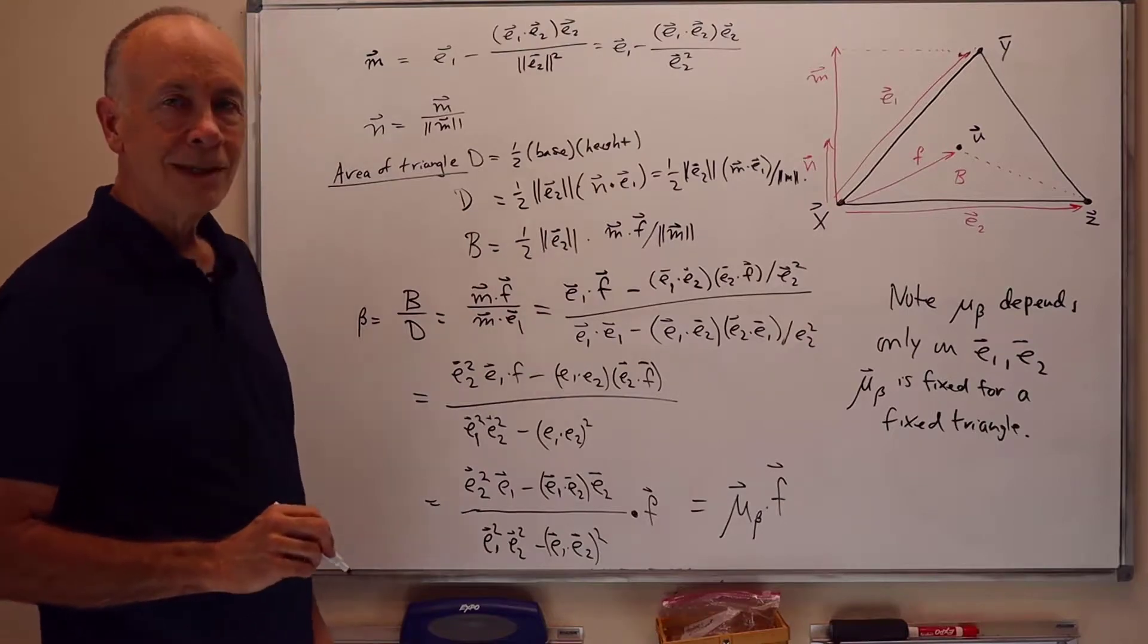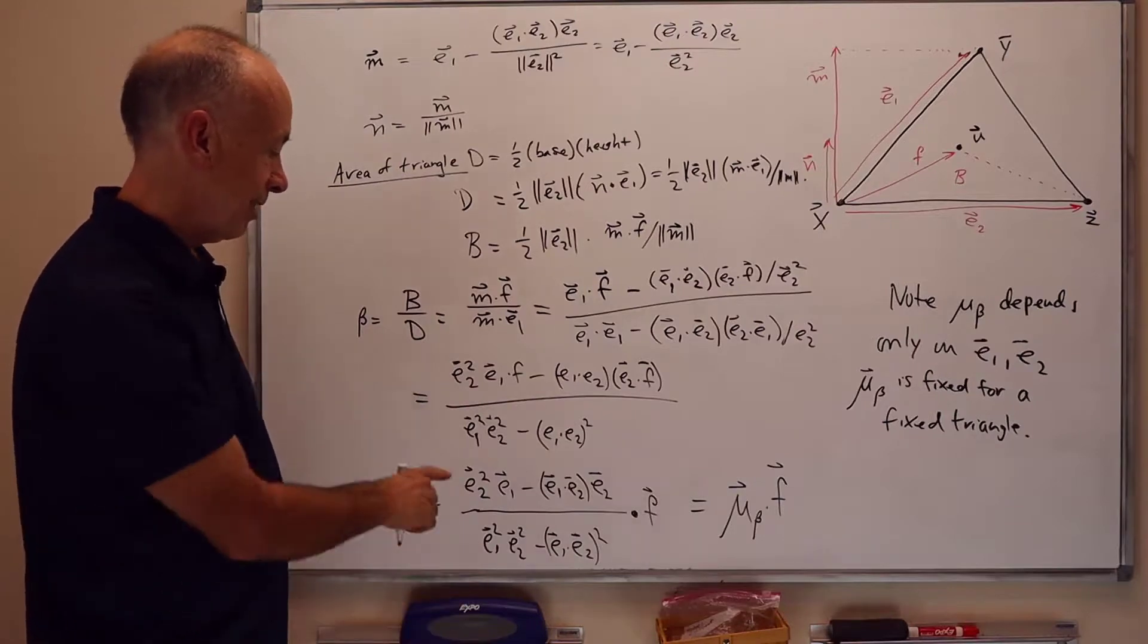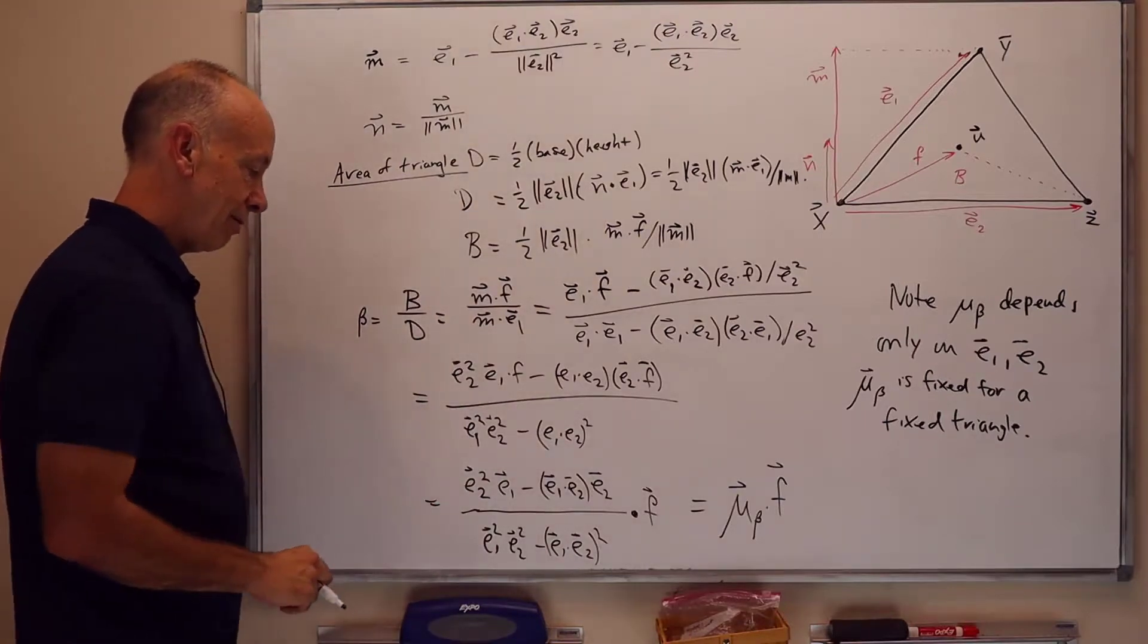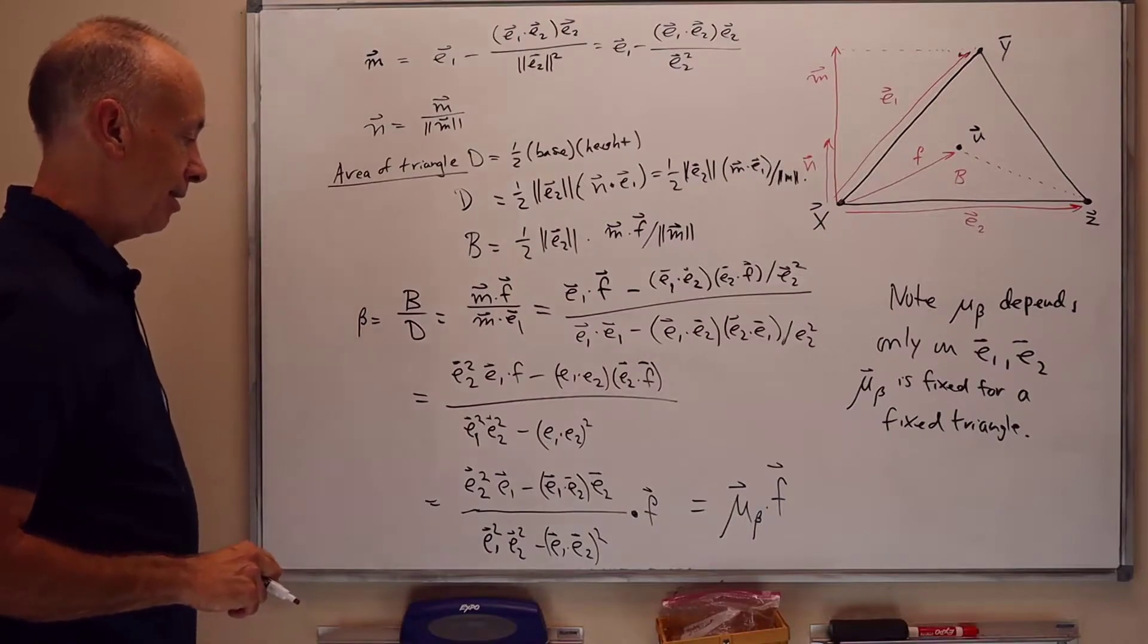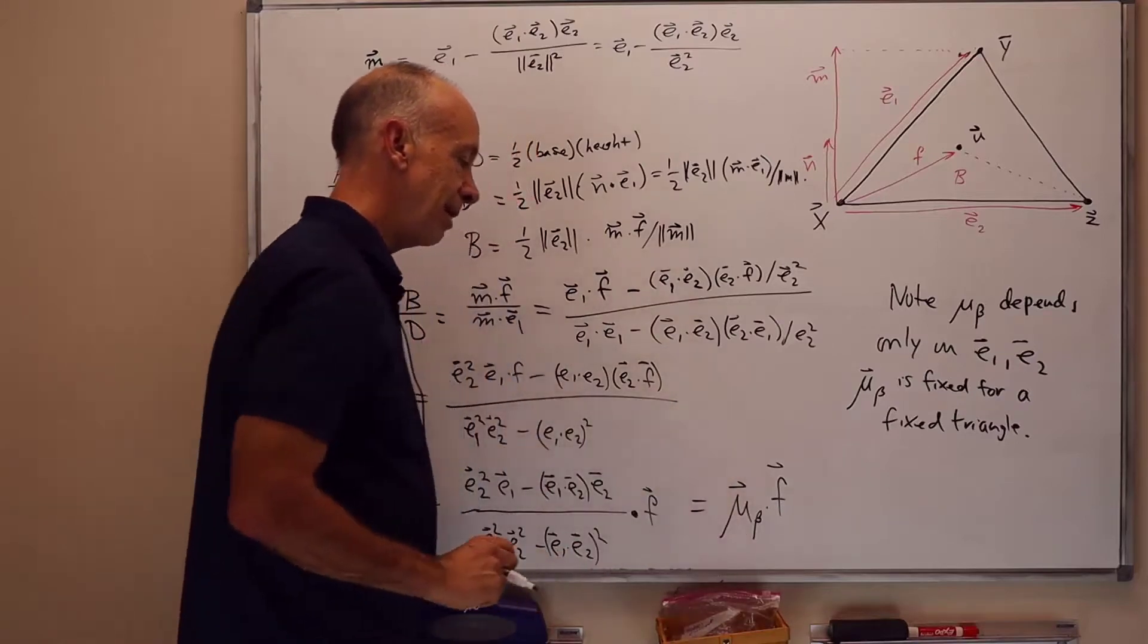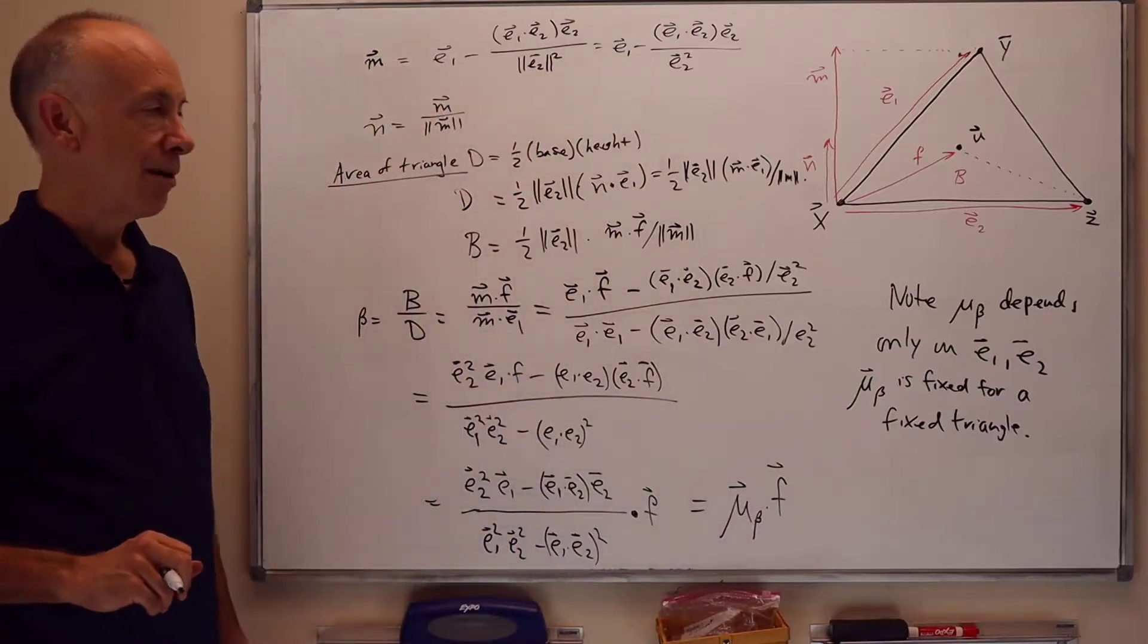So this is the method. It's a little bit complex. Obviously the formula is complicated to write out. It's got a lot of symmetries, however. And it's ideal for computer computation because you can pre-compute the mu beta value and just do a single dot product.